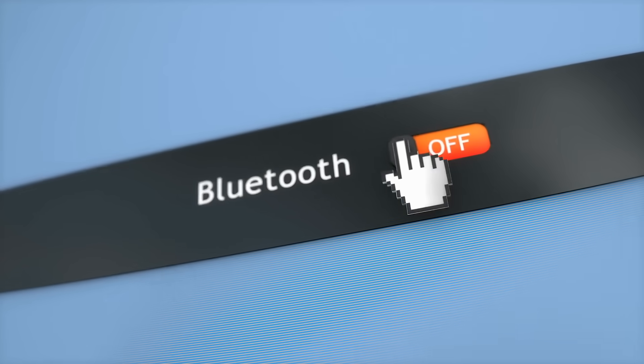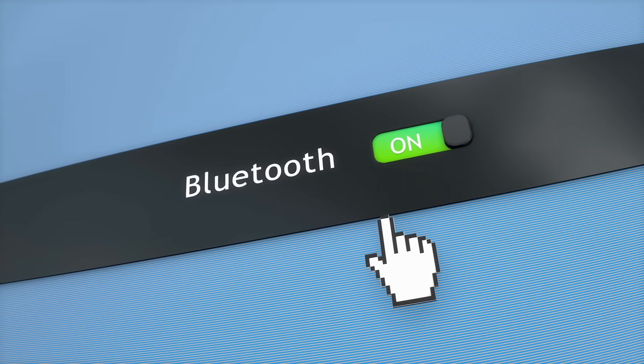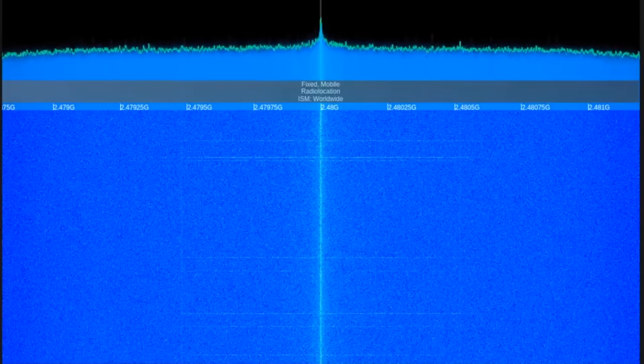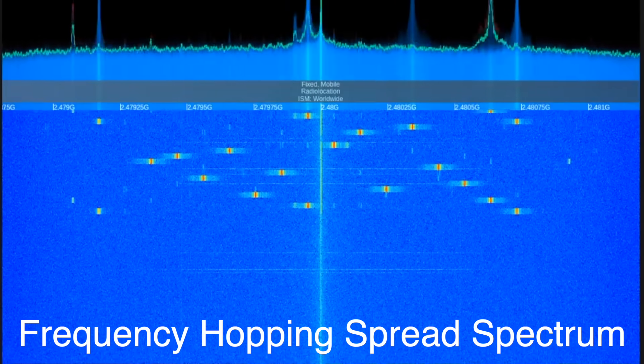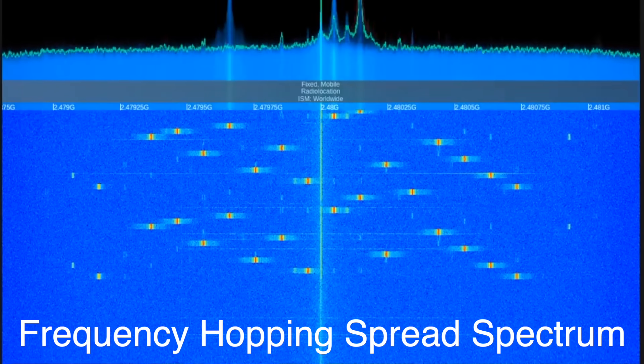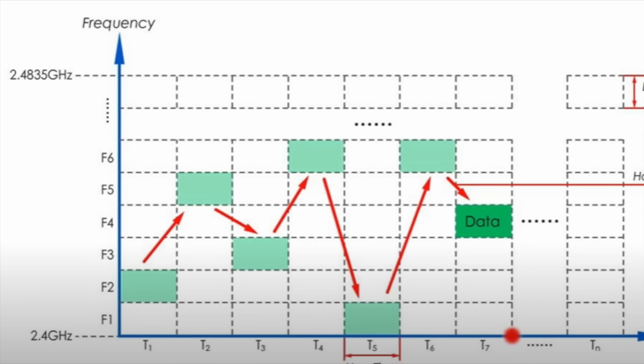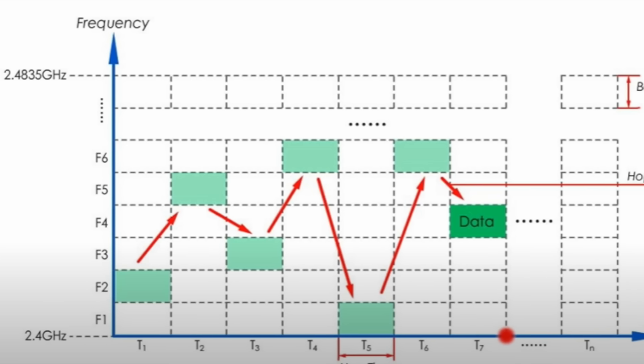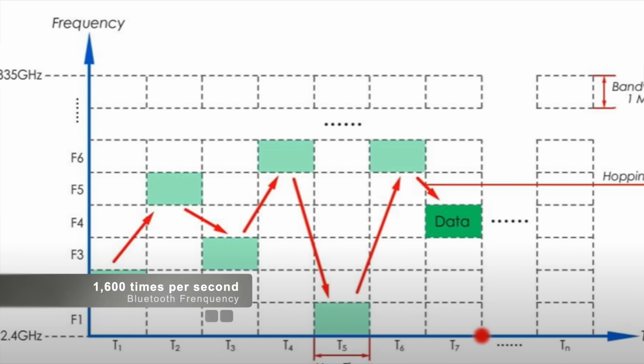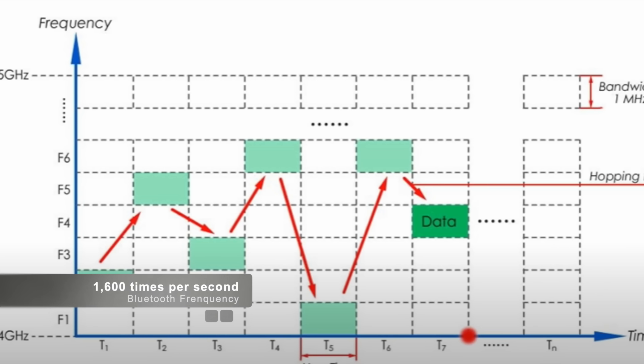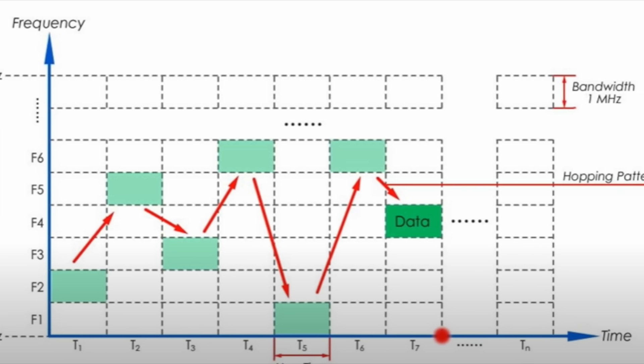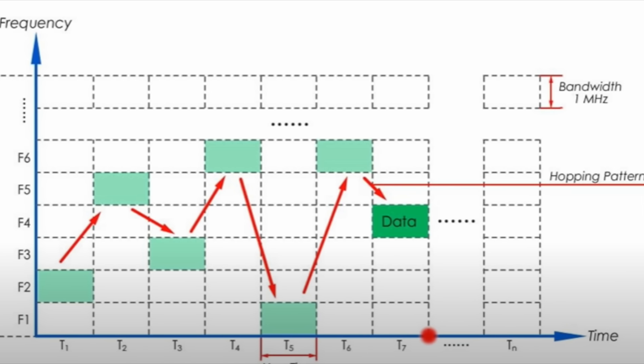But here's the clever part. Bluetooth doesn't just shout messages into the air for anyone to pick up. It uses a technique called frequency-hopping spread spectrum to keep the conversation secure and interference-free. Essentially, it rapidly switches between different frequencies within the 2.4 GHz range, hopping around 1,600 times per second. This makes it incredibly hard for unwanted listeners, or other devices using the same band, to eavesdrop or cause interference.